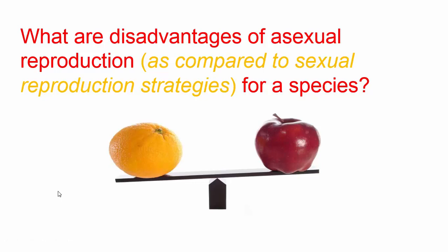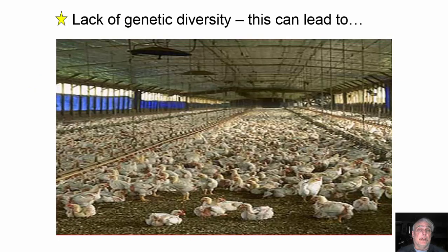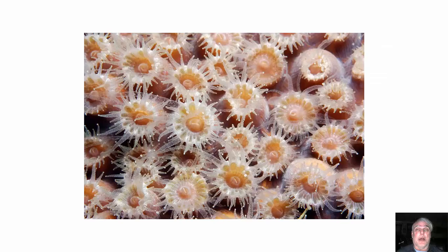What are the disadvantages of asexual reproduction for a species? The biggest disadvantage is a lack of genetic diversity. Since all members of the species are genetically identical — basically clones — this could lead to serious problems.